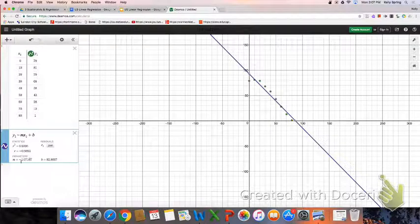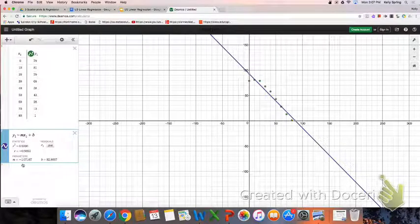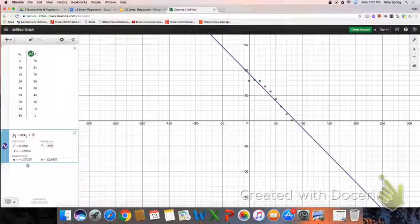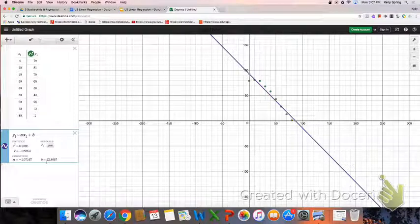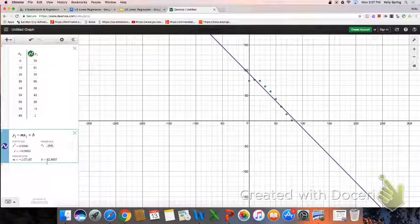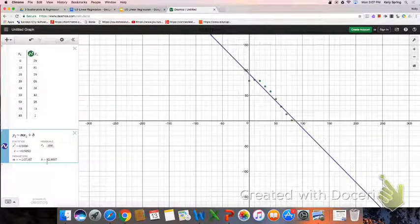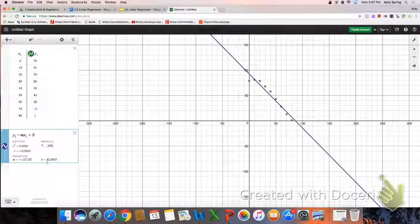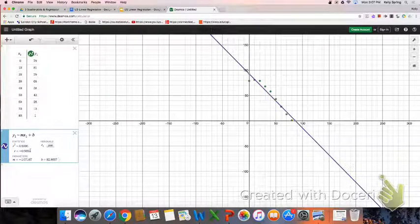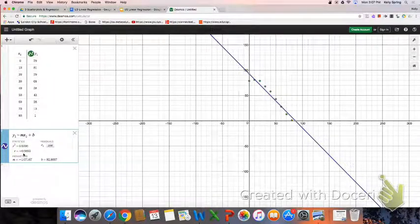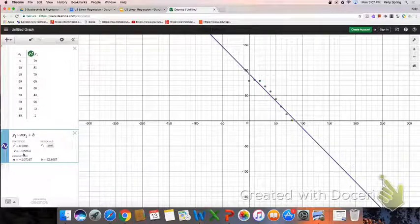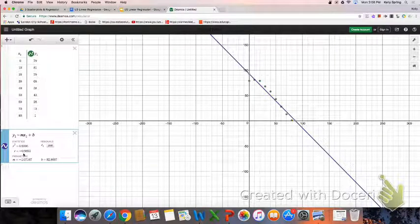So what this is showing me is that the slope is negative 1.07. I'm just going to round that and write that down. And my y-intercept, b, is 92.9. Then my regression, my correlation coefficient is right here, r. So r equals negative 0.9693.